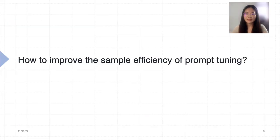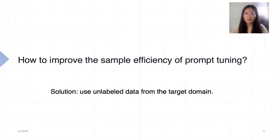Our research question is how to improve the sample efficiency of prompt tuning, particularly for few-shot or zero-shot learning. In this paper, we provide a solution based on domain adaptation by training soft prompt using labeled data from the source domain and unlabeled data from the target domain, so that we can transfer the learned soft prompt to the target domain.